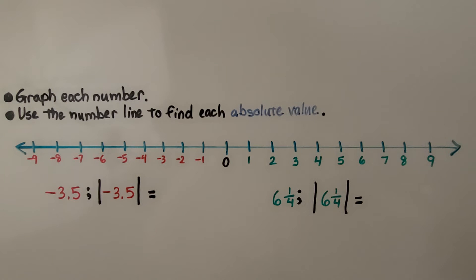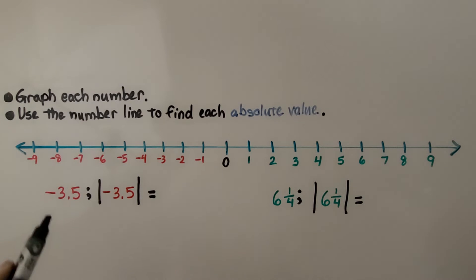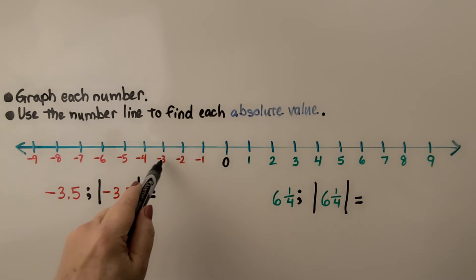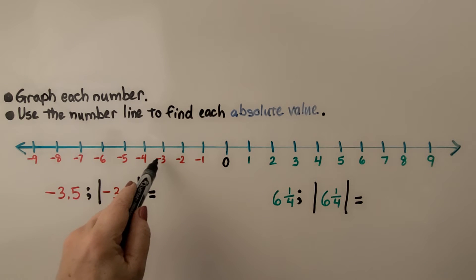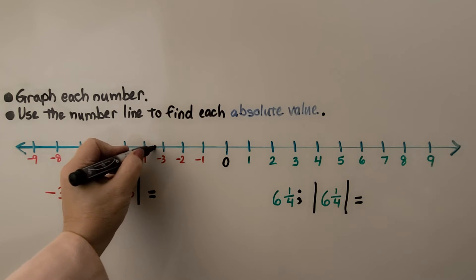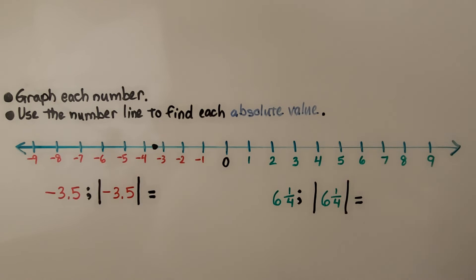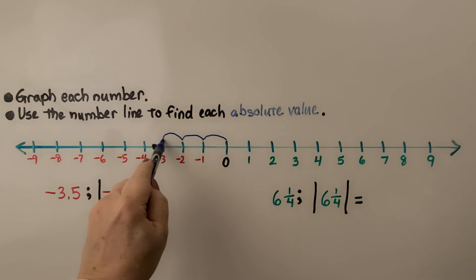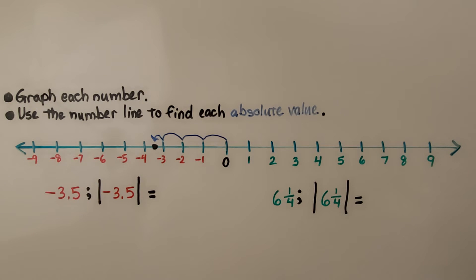Here it's telling us to graph each number, then use the number line to find each absolute value. Negative three and five-tenths — that's negative three and a half. We're going to go to the left. Here's negative three, and negative three and a half is going to be halfway between negative three and negative four, right here. Its absolute value is its distance from zero — counting the jumps, it's three and a half from zero, so its absolute value is three and a half.